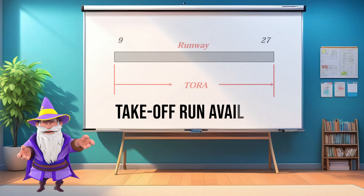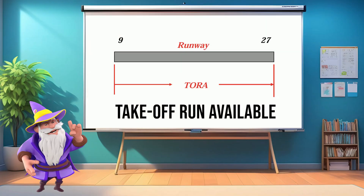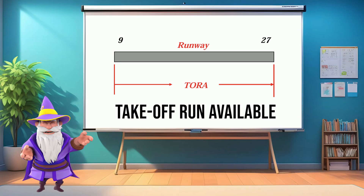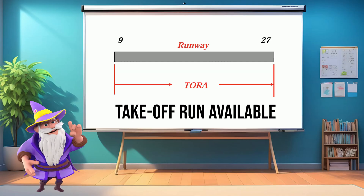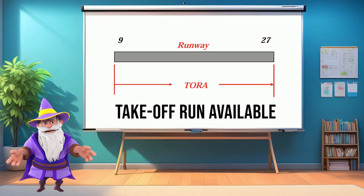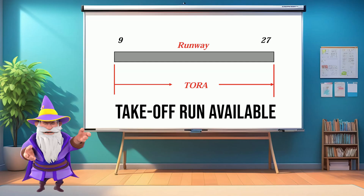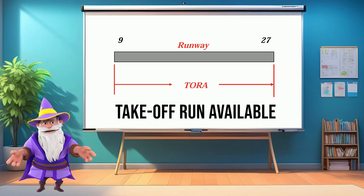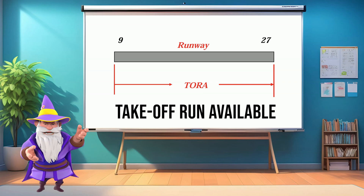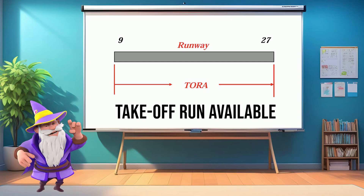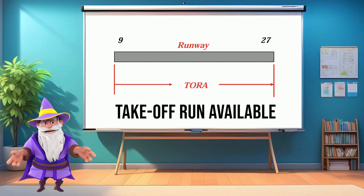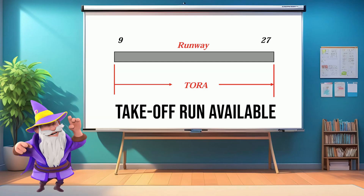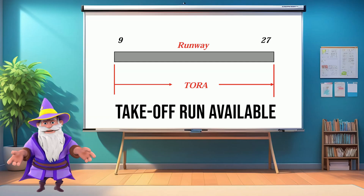Let's start with Takeoff Run Available, or TORA. TORA is the length of runway pavement that's declared available and suitable for the ground run of an aircraft during takeoff. This is the physical runway you can use to accelerate before rotation. However, TORA does not include any clearways or stopways — it's strictly the paved surface meant for takeoff.